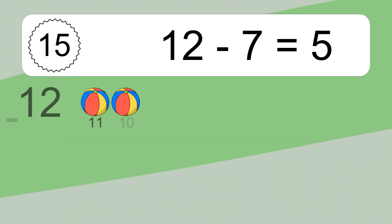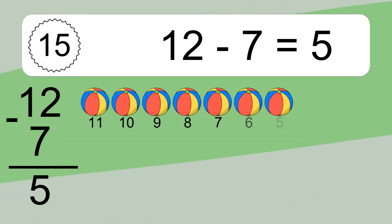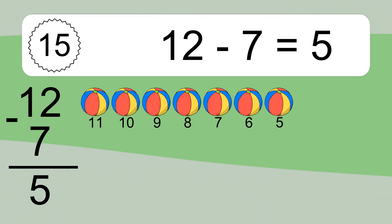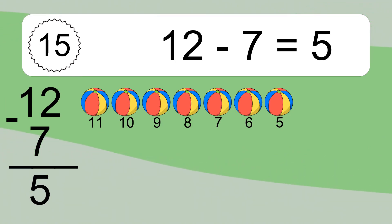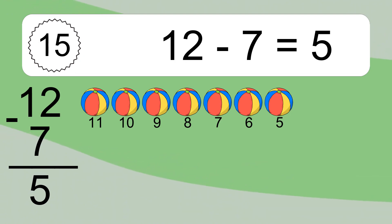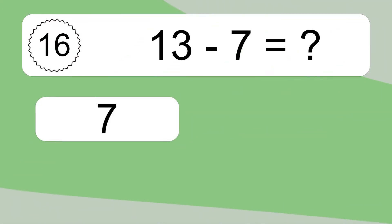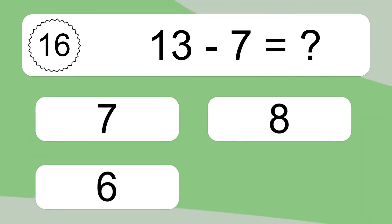12 minus 7 equals what? 12 minus 7 equals 5. Let's count it. 11, 10, 9, 8, 7, 6, 5.